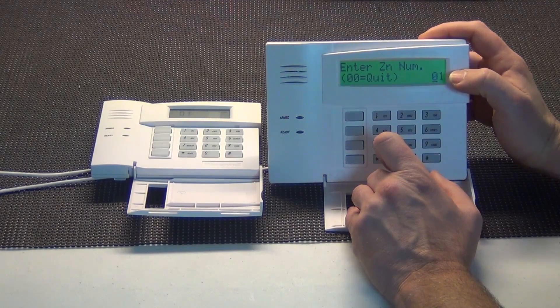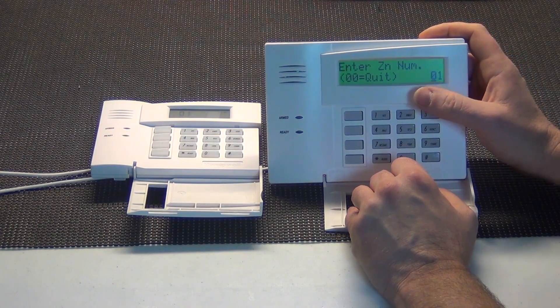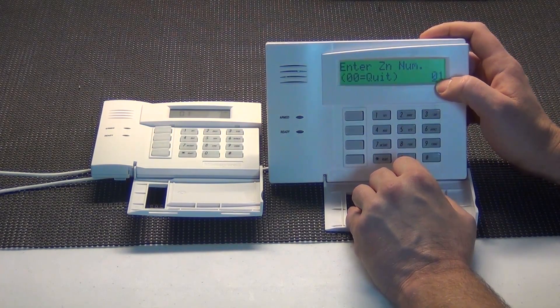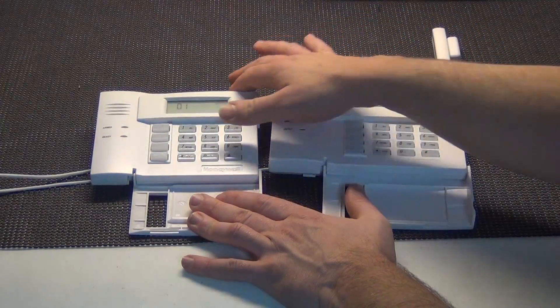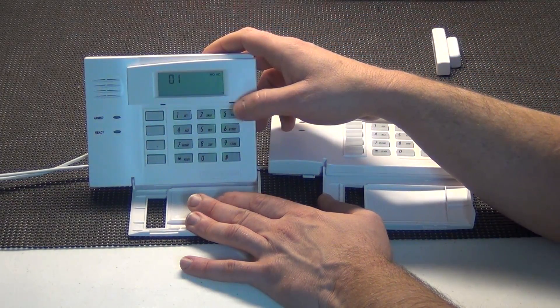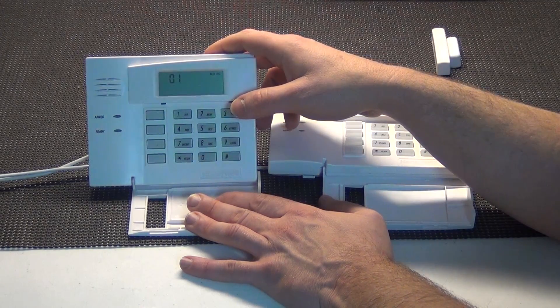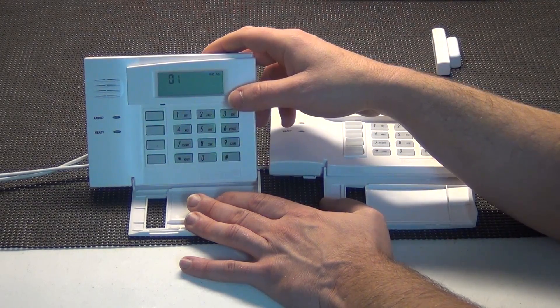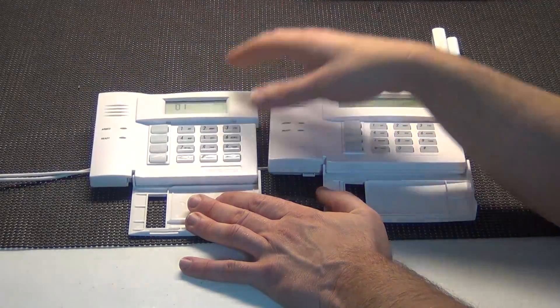And then it will say enter zone number or 00 equals quit, and then it has a flashing cursor in 01 on the 6160. On the 6150, it just shows 01. Not quite sure what that means if you've never done this before. So you'll be pretty much programming blind.